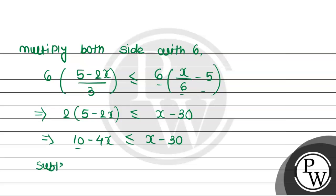Subtract 10 from both sides. The 10 cancels out, so we get minus 4x less than or equal to x minus 40.